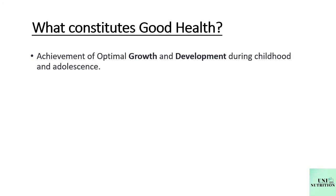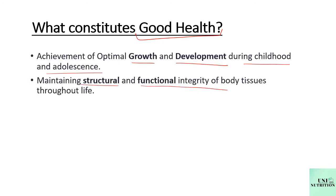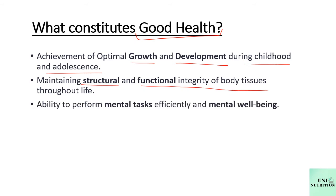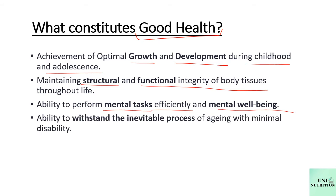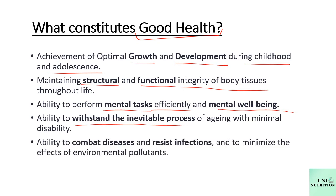What constitutes good health? Proper growth and development — achieving good health during childhood and early adolescence. Maintaining structural and functional integrity of the body. Ability to perform mental tasks efficiently and mental well-being. Ability to withstand the inevitable process of aging with minimum disability. And the ability to combat diseases, resist infection and to minimize the effects of environmental pollutants. If all these properties have been achieved, we can say that an individual is in good health.